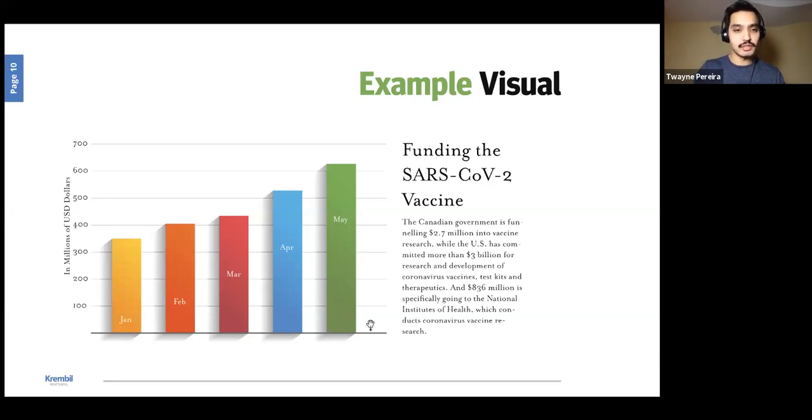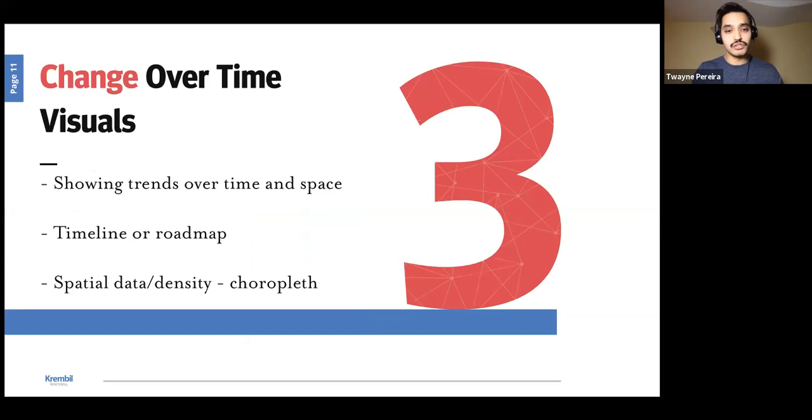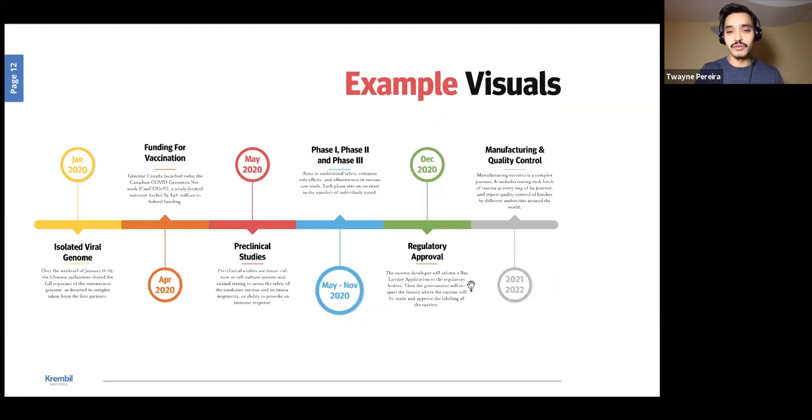The next type of visual is going to be changes over time. So you can show changes over time and space. You can sort of use this as a sort of line graph as well. But I like to think of this as like a roadmap, or sort of a flow chart, or a timeline. You can also show density and spatial data using choropleth graphs as well. And I'll show an example of that. So in this, in the next visual that I have is a timeline. So in this case, I've chosen exactly what I've built on in the previous few slides is a timeline for vaccine. This visual is straightforward to understand. It's colorful, so it grabs your attention. And you can follow along reading each step of the way because it's organized in that manner.